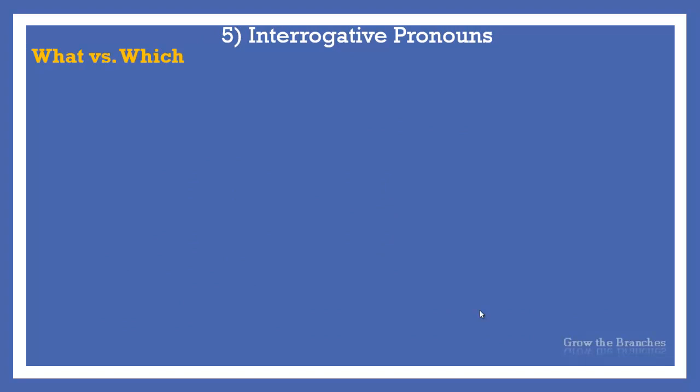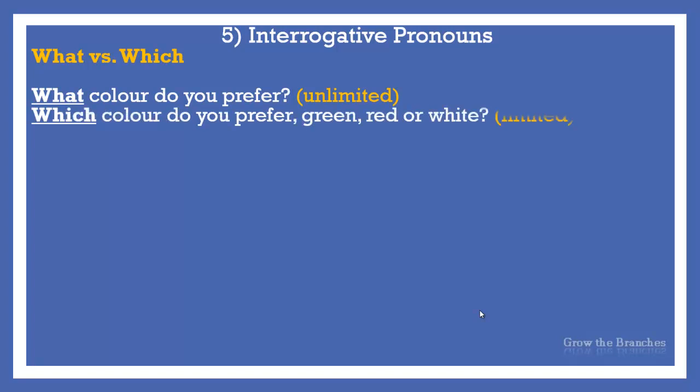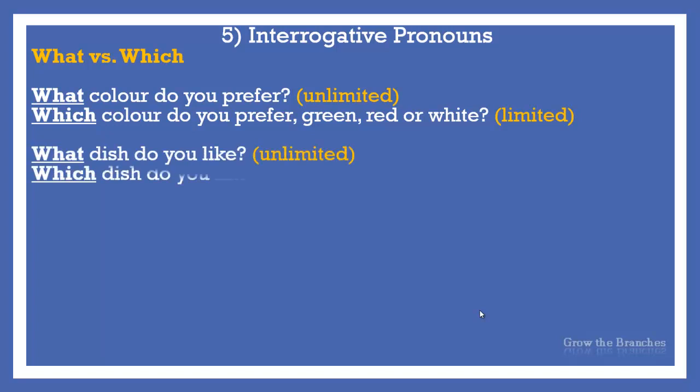What versus which. Which is used for things and persons, singular or plural, subject or object. It has no possessive case. What is used when we make the selection from a more or less unlimited number; which is used to present the choice from a limited number. Note the difference: What colour do you prefer? — Which colour do you prefer? — Green, red, or white? What dish do you like? — Which dish do you like? — Couscous or spaghetti? As you can see, the answers to what are unlimited, but the answers to which are limited within the sentence itself.